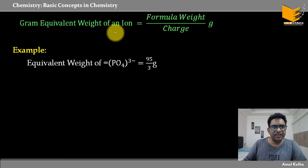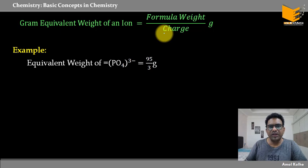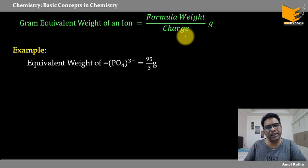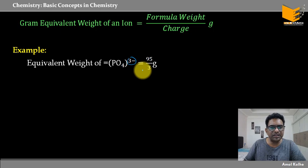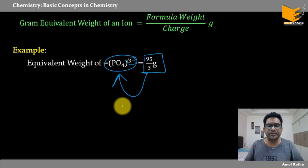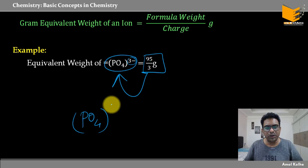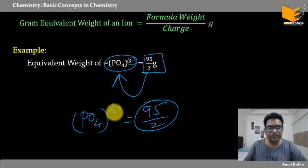Yahan pe apan divide kar rahe hain by total number of either positive or negative charges to calculate the equivalent weight of any ionic compound. Agar koi ion hai, toh it's very simple: us ka jo bhi formula weight rahega divided by total charge us ion ke upar rahega — that is the n factor. For example, phosphate ion PO₄³⁻: equivalent weight = 95 / 3. Agar hypothetically PO₄²⁻ hota, toh 95 / 2 = equivalent weight of that ion.